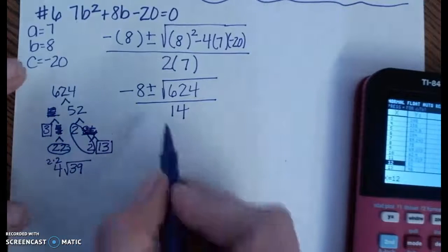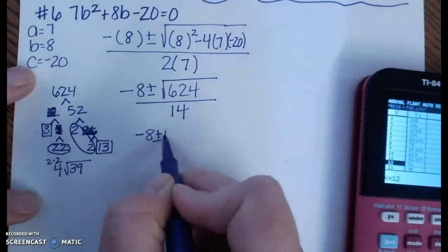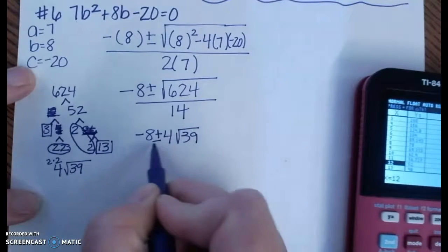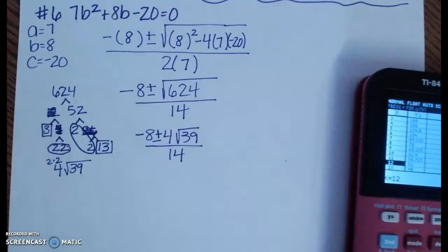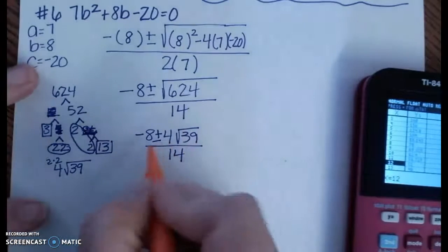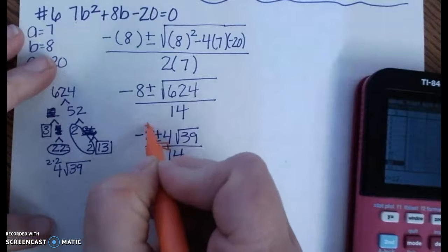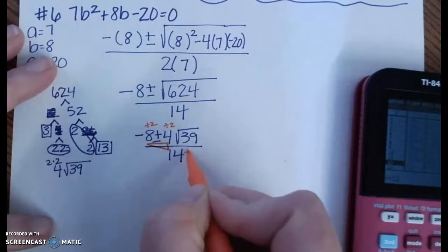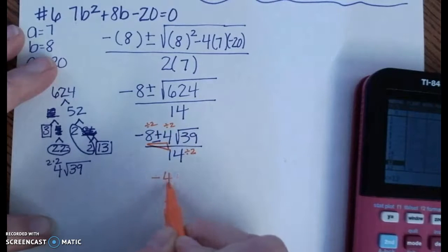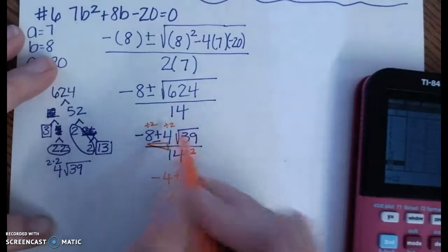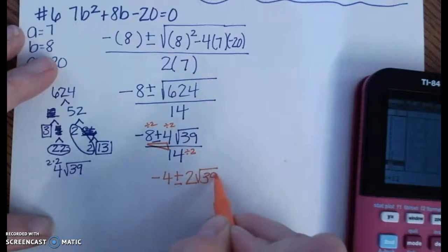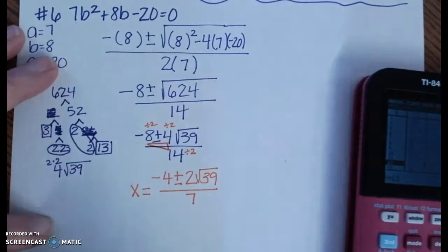So let's substitute this in: -8 ± 4√39 all over 14. And then like we did on the other one, we need to check all of these outside numbers, outside the radical numbers, to see if they reduce by the same amount. It looks like they all have a 2 in common. And what that means is we're going to divide each of these by 2. So -8 ÷ 2 is -4 ± 4 ÷ 2 is 2√39 divided by 14 ÷ 2 is 7. So my x-intercepts or my 0s or my roots or my solutions, whatever you want to call them, this is going to be the answer.